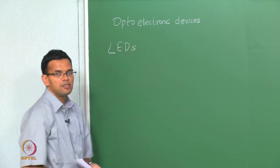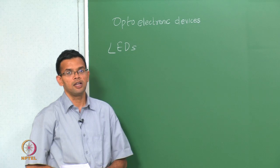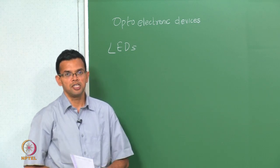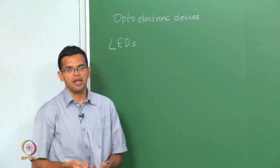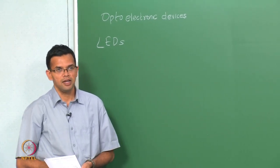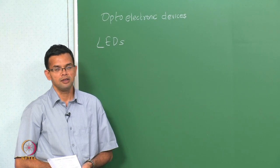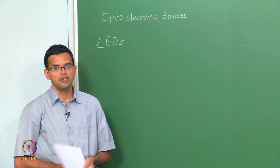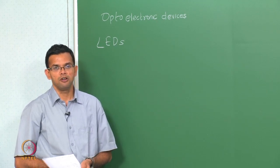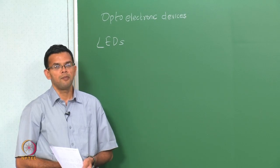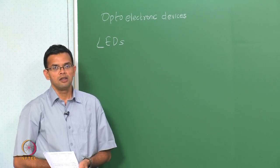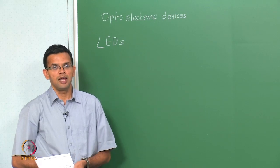In the case of LEDs we saw that we could model them as a simple pn junction where we inject carriers. We inject electrons from the n side and holes from the p side, so that these electrons and holes recombine in order to give you light. Depending upon the band gap of the material, that determines the wavelength of the light.